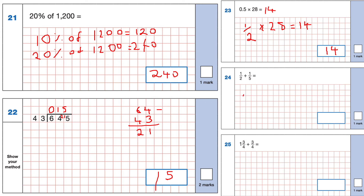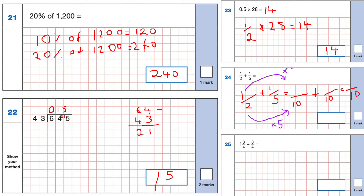Question 24: a half plus a fifth. We need a common denominator — the lowest common denominator is 10 (2 times 5). A half becomes 5/10 (multiply top and bottom by 5); a fifth becomes 2/10 (multiply top and bottom by 2). 5 plus 2 is 7, so the answer is 7/10.